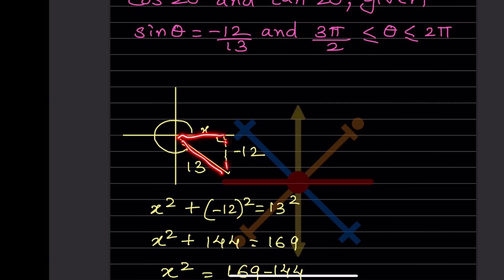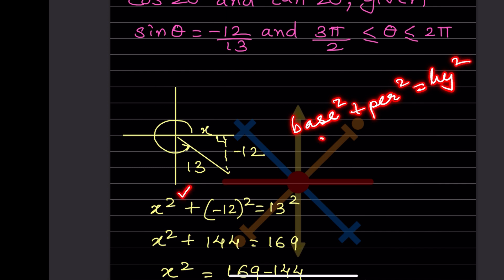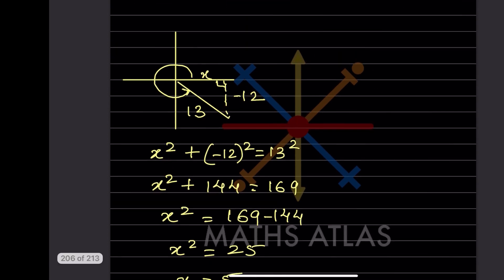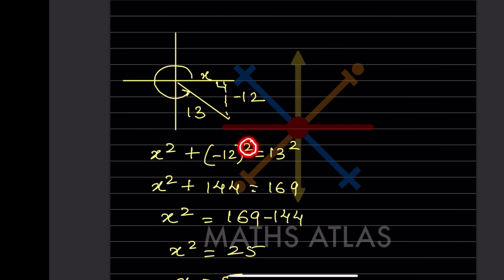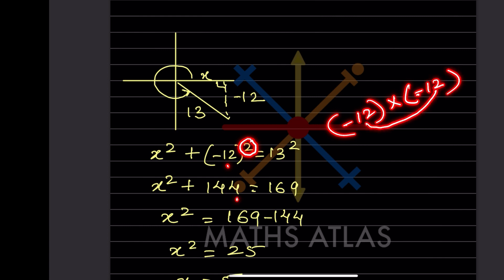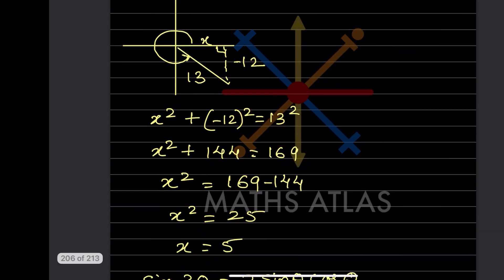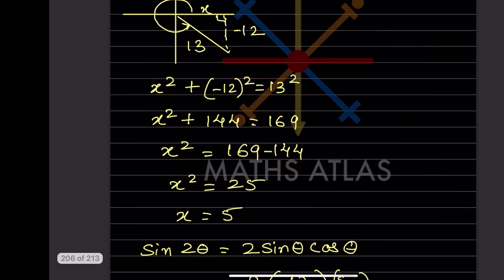Using the Pythagorean theorem: x² + (-12)² = 13². So x² + 144 = 169, giving x² = 25 and x = 5.